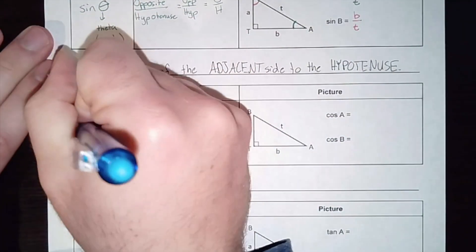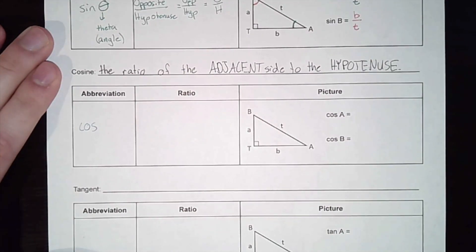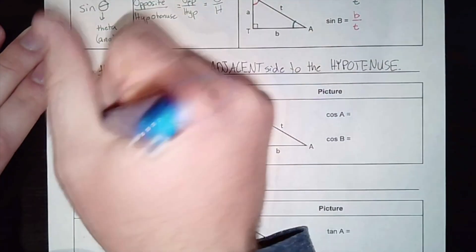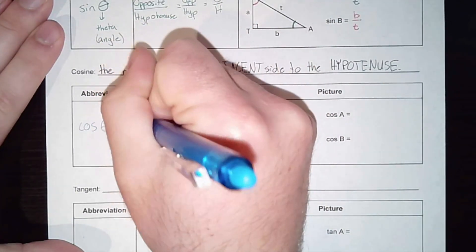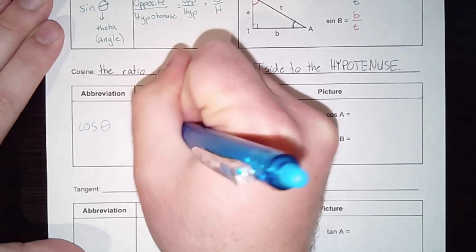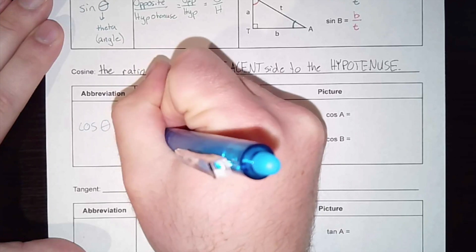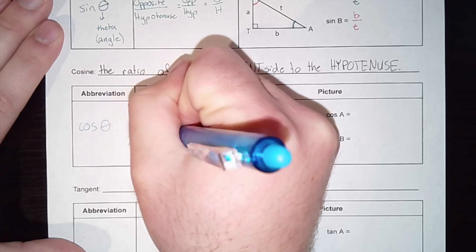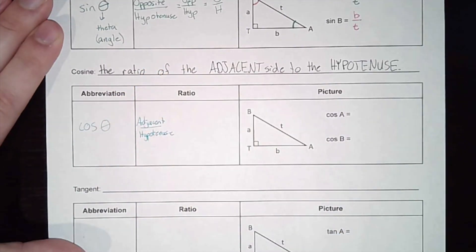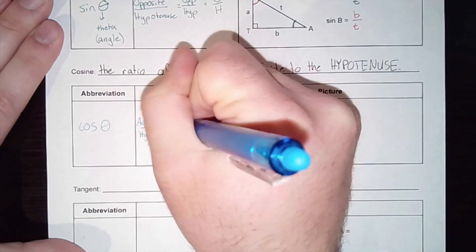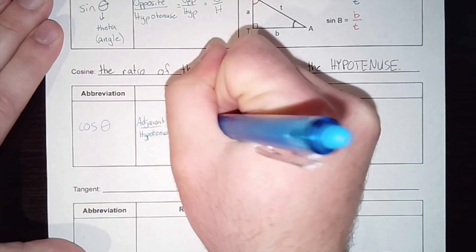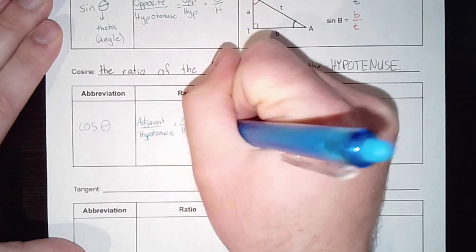The abbreviation for cosine is COS — we call it cosine, not 'cos.' I need an angle measure in there again. The ratio is adjacent over hypotenuse, which I can also abbreviate as adj over hyp, or simply A over H.